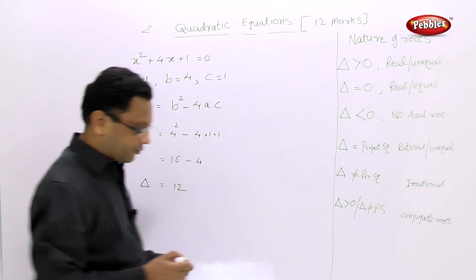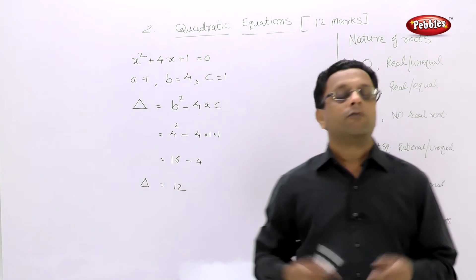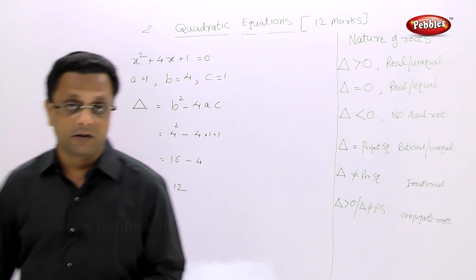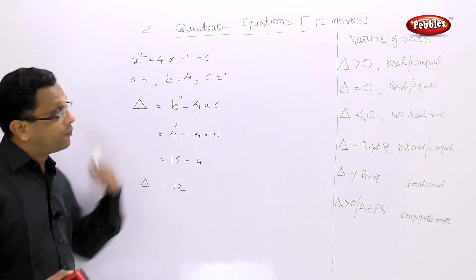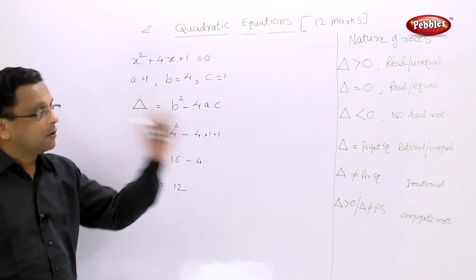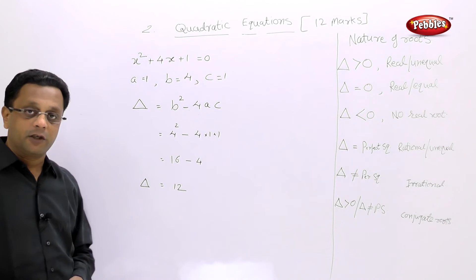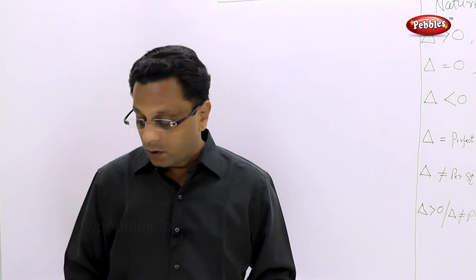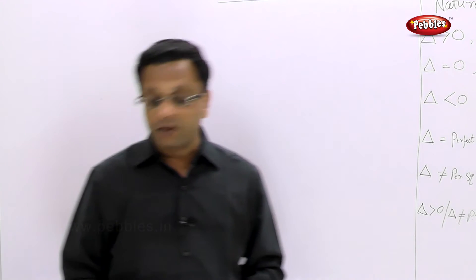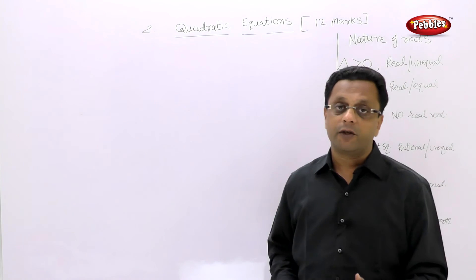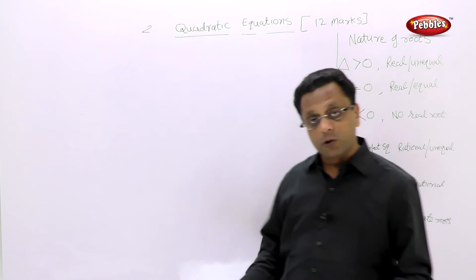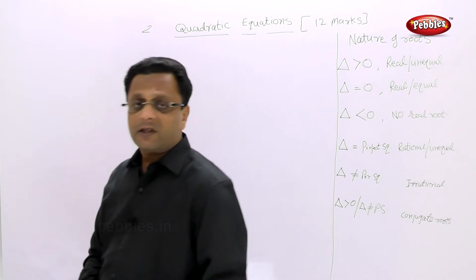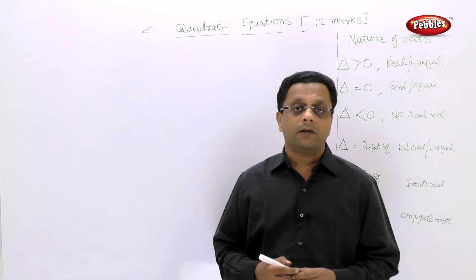This first kind of question may be asked for one mark at most, but I don't think they will ask just this. They will further modify the question to determine the nature of roots depending on the discriminant. Another kind of example is: determine the nature of roots of the following equations from their discriminant.